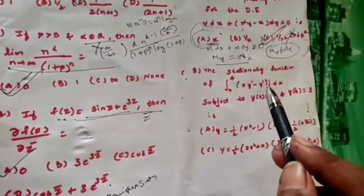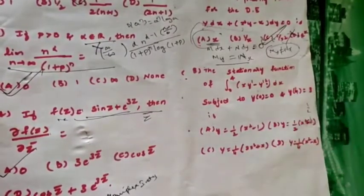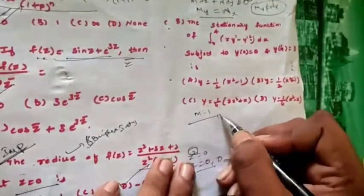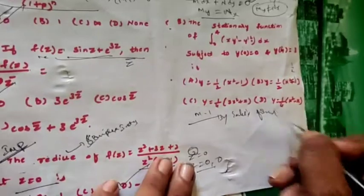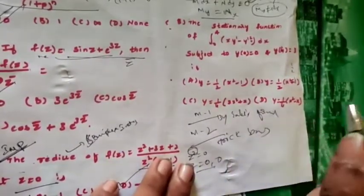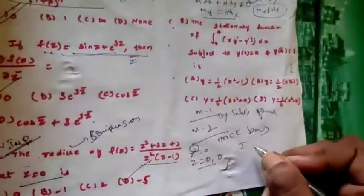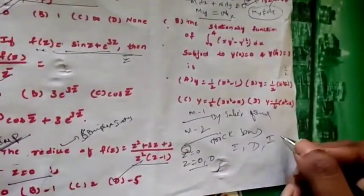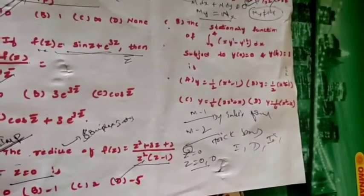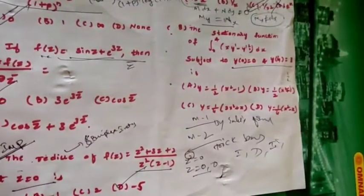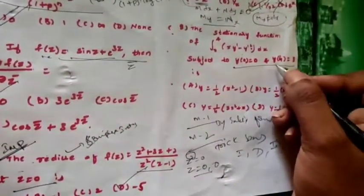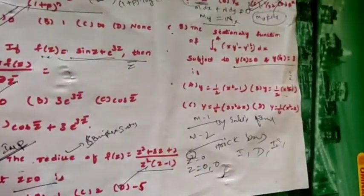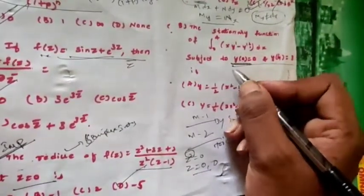The next question: find the stationary function of ∫₀⁴ (xy' - y'²) dx, subject to y(0) = 0 and y(4) = 3. Four options are given. Method one is using Euler's formula. Method two is the trick-based method. For any integral or calculus of variation problem where boundary conditions are given, we put those conditions into the options to eliminate wrong answers.